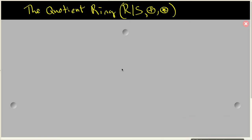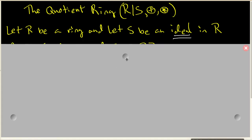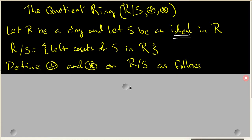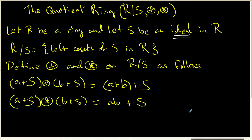In this video we are going to investigate the quotient ring R mod S under its addition and multiplication. The first thing I want to do is establish the setting. R is a ring, and it is important to realize that S is an ideal in R. In previous videos we showed that if R mod S is the set of left cosets of S inside R, then we can define an addition and multiplication on that set of left cosets.